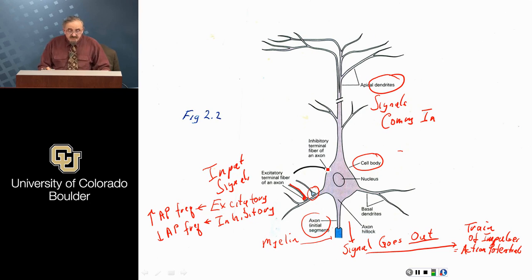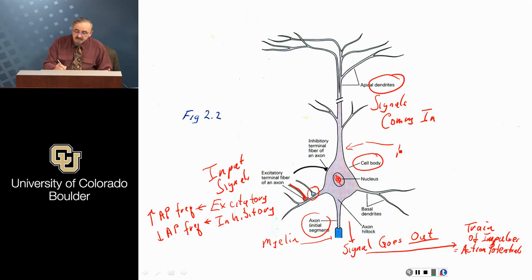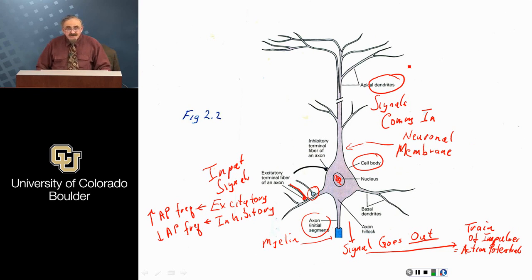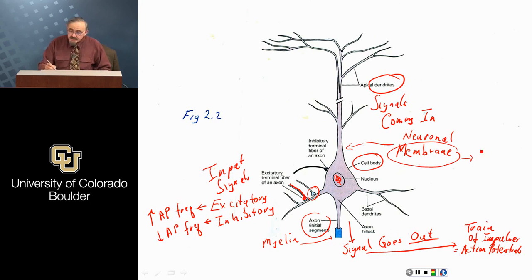In addition to the things found in any cell — such as a nucleus, mitochondria, and metabolic components we'll largely ignore — the main component of the neuron is the membrane, or neuronal membrane. Every cell is surrounded by a plasma membrane consisting largely of a layer of fat called a lipid. Suffice to say, it is the membrane which yields the electrical signal.